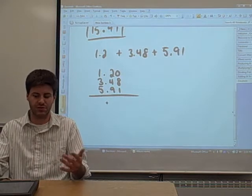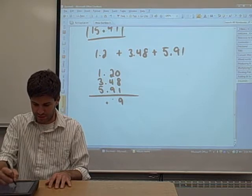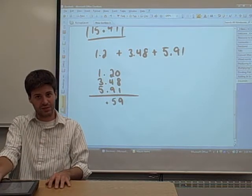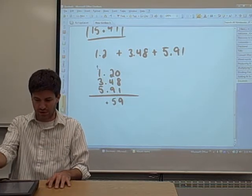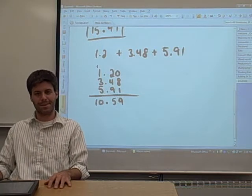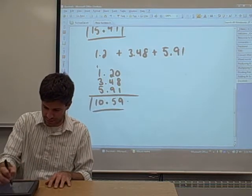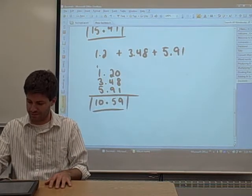Then you're just adding three numbers like you normally would. 8 plus 1 is 9. Let's see, add those three numbers and you get 15, I believe. Carry the 1, 2, 5. It looks like you get a 10. 10.59 is the sum of those three decimals. Great.